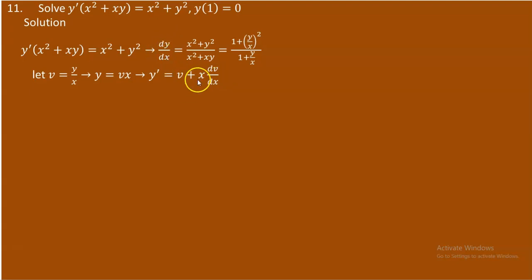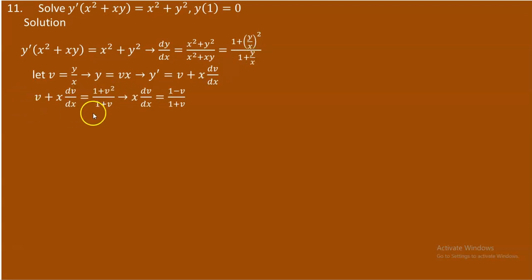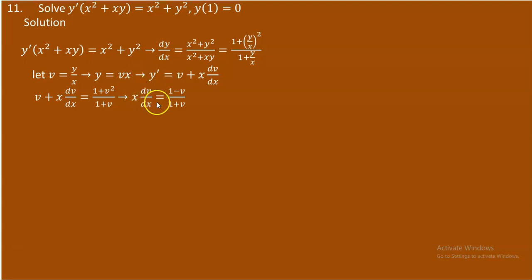In place of dy/dx, substitute v + x dv/dx, and replace y/x with v. This gives v + x dv/dx = (1 + v²) / (1 + v). Shifting v to the right, we get x dv/dx = (1 + v²)/(1 + v) − v, which simplifies to (1 − v)/(1 + v).